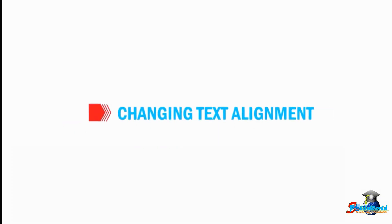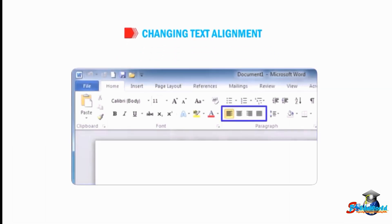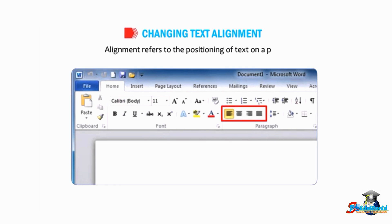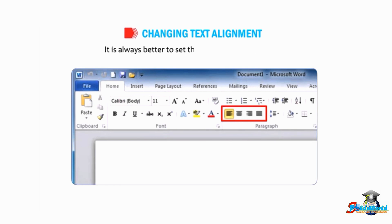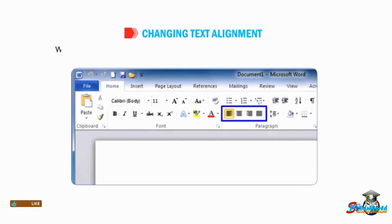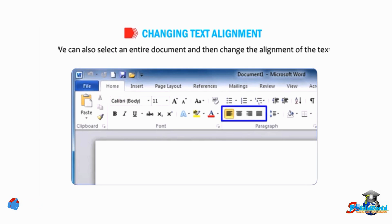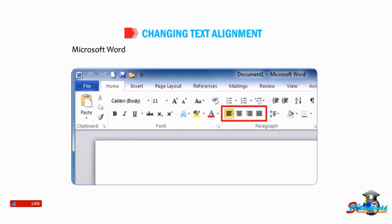Now let us understand how to change text alignment. Alignment refers to the positioning of text on a page. It is always better to set the alignment before typing. We can also select an entire document and then change the alignment of text. Microsoft Word provides four types of alignments.